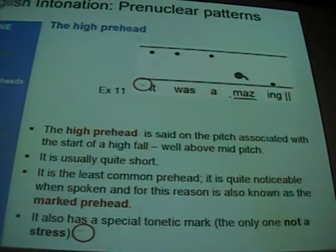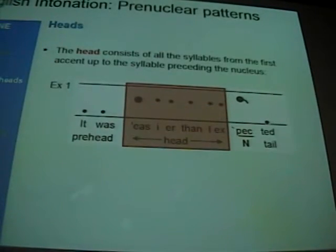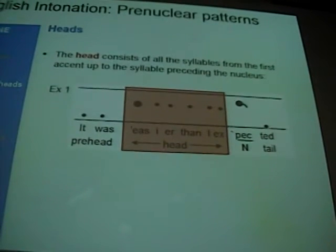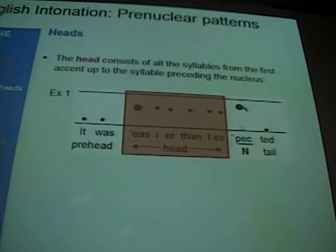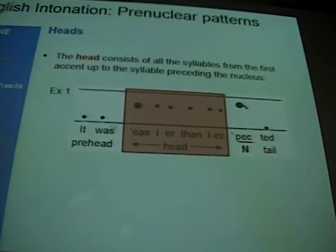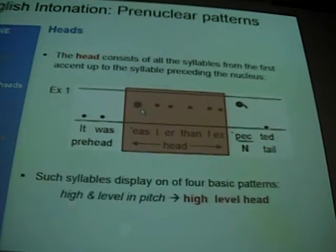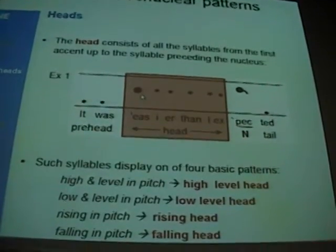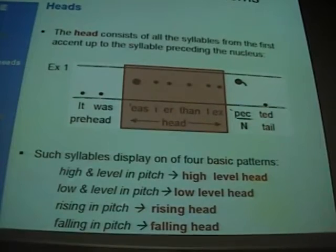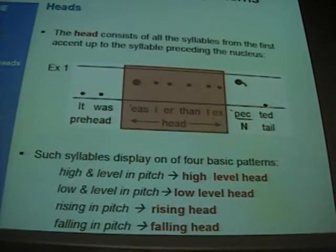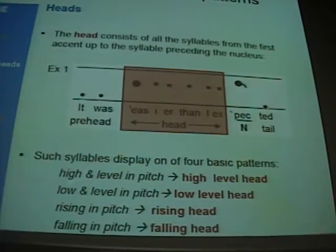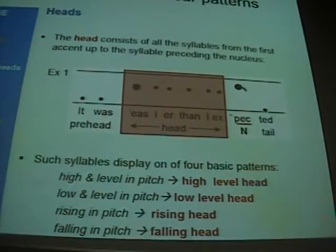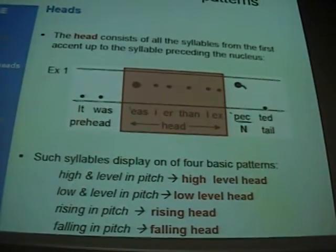Now the remaining part of the pre-nuclear pattern is the head. Going back to example one, all the syllables between the pre-head and the nucleus form the head, starting on the first accent. The syllables in this slot can have one of four basic patterns — four unmarked patterns in the sense that they are routine: high-level pitch giving us the high head, low-level pitch giving us the low head, rising pitch giving us the rising head, and falling pitch giving us the falling head.